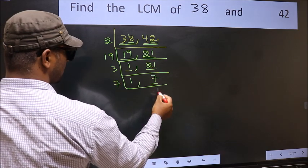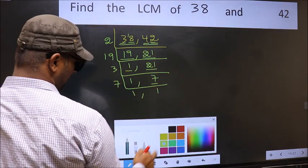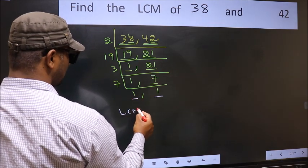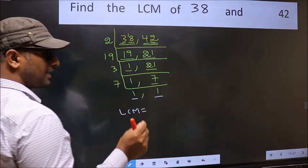Now we have 7. 7 is a prime number, so 7×1=7. We got 1 in both places, so our LCM is...